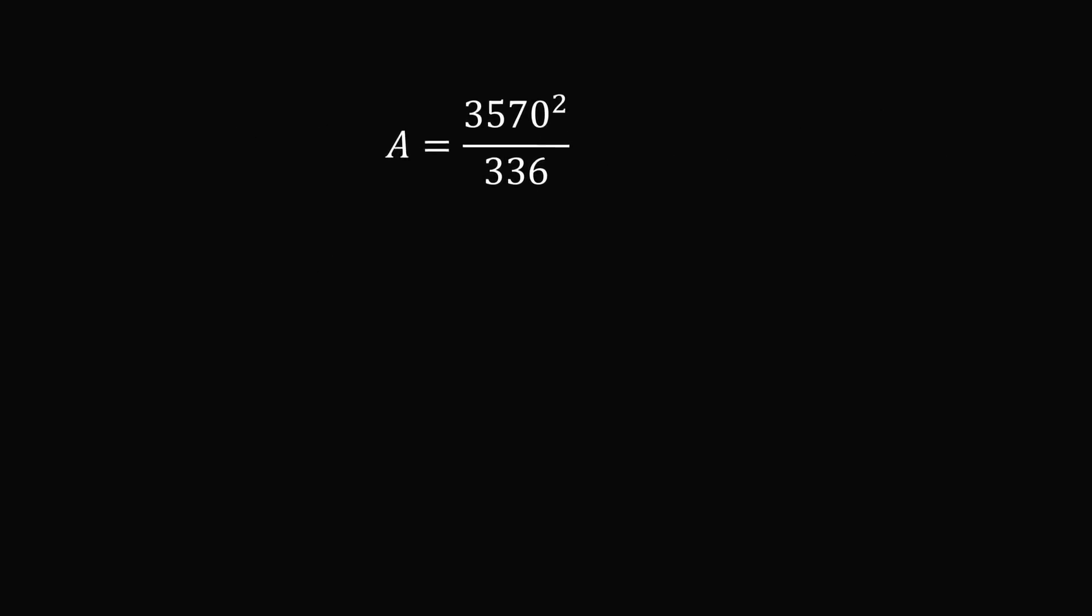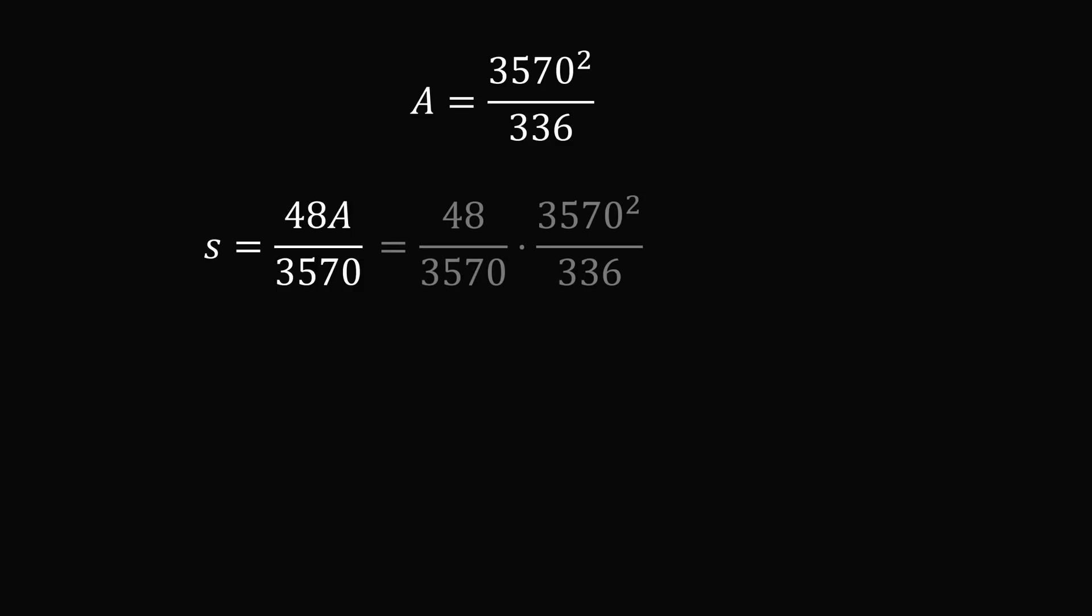We will now substitute this into the formula for the semi-perimeter, which is equal to 48A over 3570. We substitute in and then simplify, to get the semi-perimeter is equal to 510.